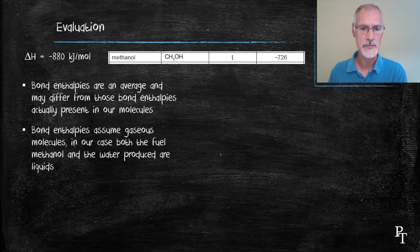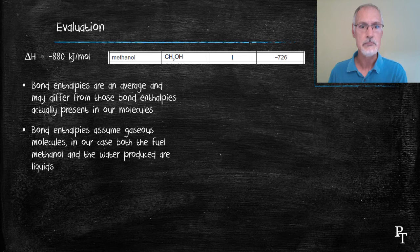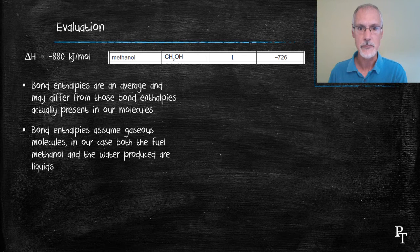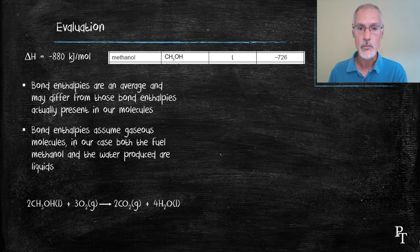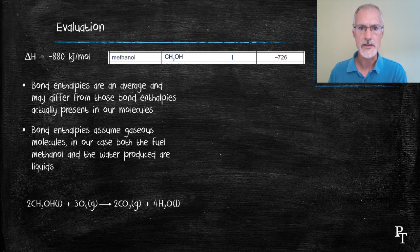But perhaps the biggest problem that lies in this is the fact that bond enthalpies is based on gaseous molecules. And if you look at the reaction we studied, methanol is a liquid and the water that we produced is a liquid. That's going to cause some changes in our values.